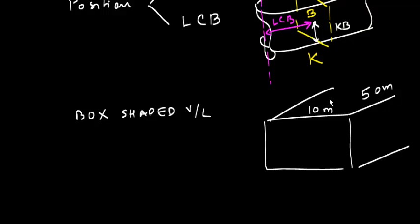Suppose this is a box-shaped vessel, sort of rectangular shape, which is floating here with some draft. This is the waterline. Let me just represent here. This is the waterline.